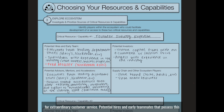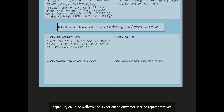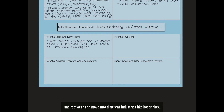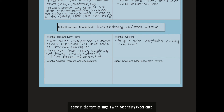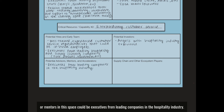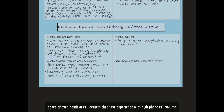Now we'll go through the same process for extraordinary customer service. Potential hires and early teammates that possess this capability could be well-trained, experienced customer service representatives. If we're looking for extraordinary customer service, we might have to move beyond e-commerce and footwear into industries like hospitality — perhaps acquiring an executive from a leading hospitality or luxury clothing company known for exceptional customer experiences. Potential investors could be angels with hospitality experience, and potential advisors or mentors could be executives from leading hospitality companies, marketing and HR professors, or heads of call centers with experience managing high phone call volume.